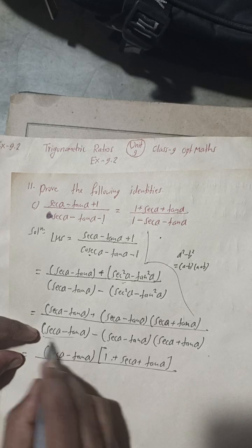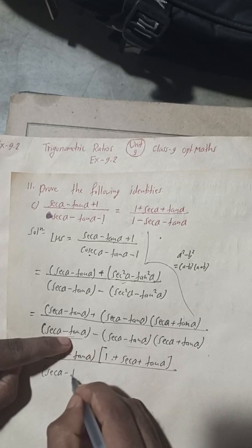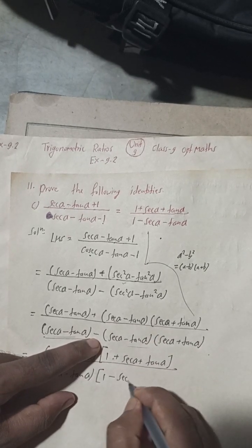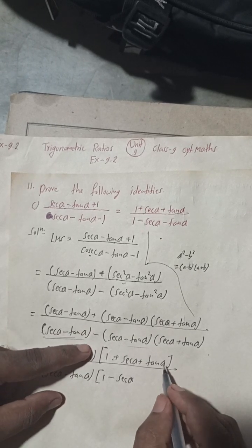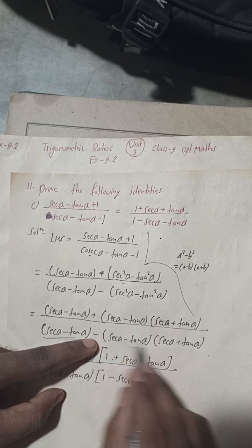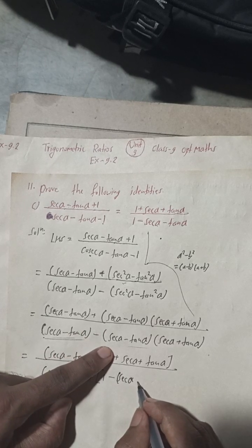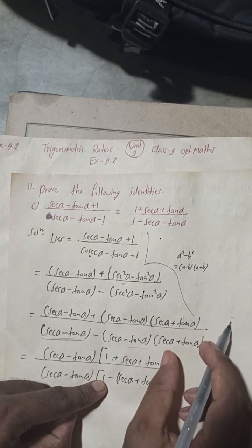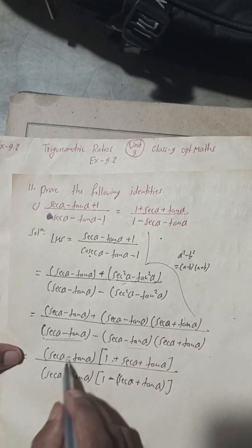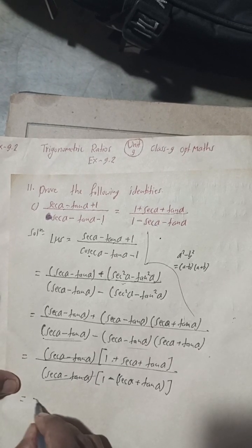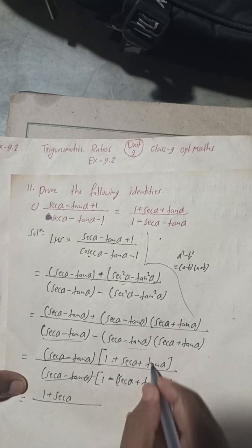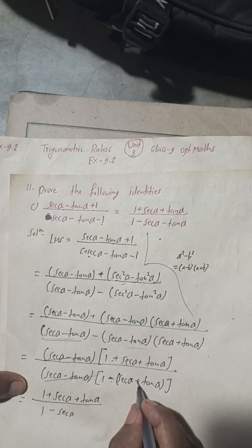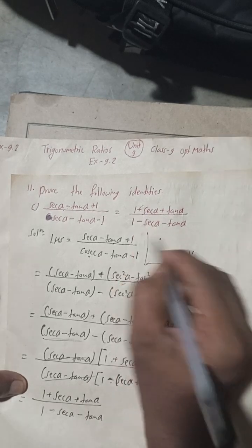Similarly take sec α minus tan α common from the denominator. When taken outside, remaining is 1, and then minus sec α plus tan α — put in bracket because of the minus sign. Both sec α minus tan α terms cancel. Remaining is 1 plus sec α plus tan α over 1 minus sec α minus tan α, which is the RHS.